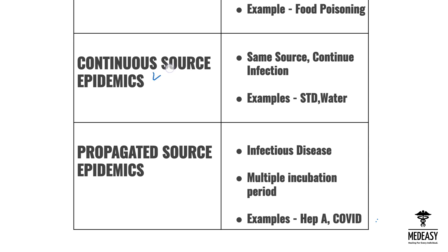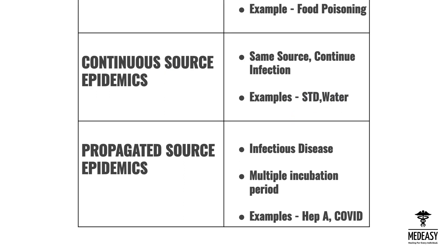The second type is continuous source epidemic. In a continuous source epidemic, the same source continuously infects a large number of people. An example is STDs and water. For instance, an infected well continuously spreads infection to the whole village that drinks water from it.